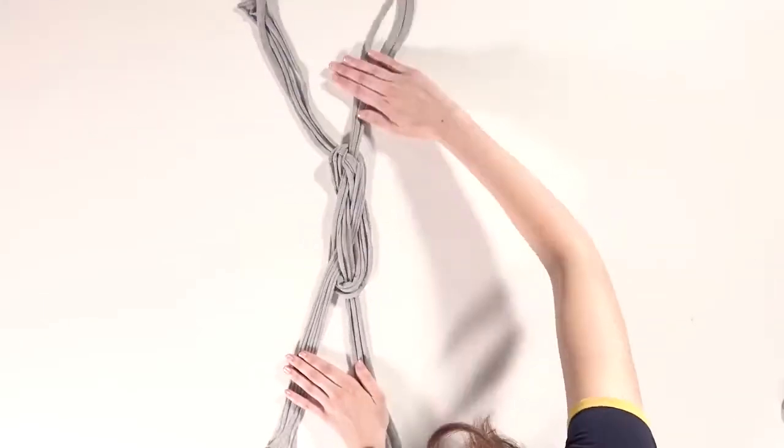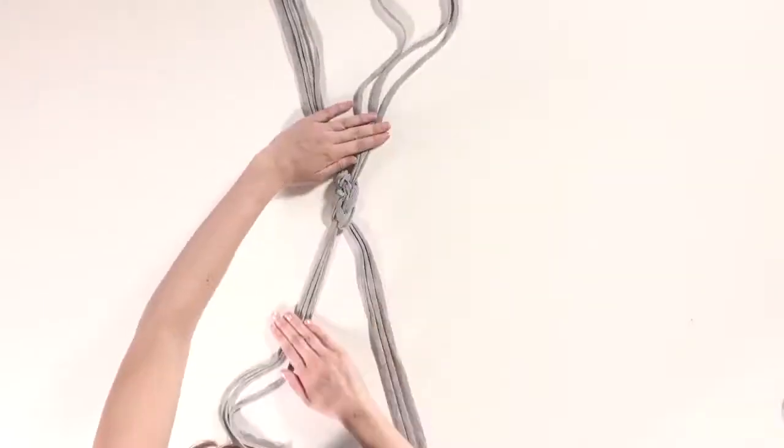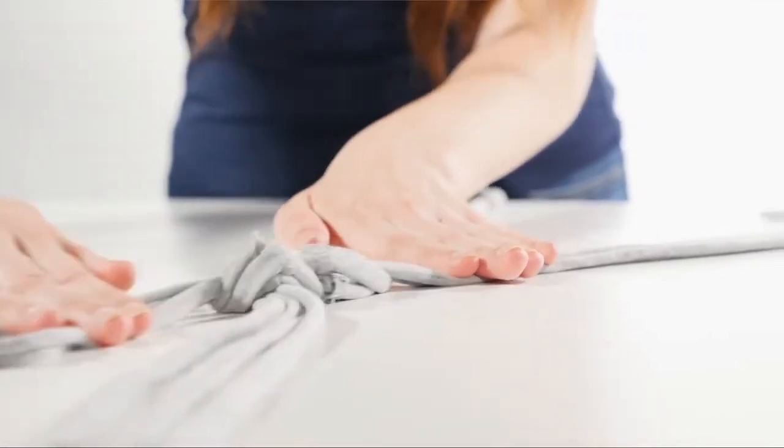If your knot looks like this, we're going to start to slowly tighten the knot by pulling each end individually like this. This is called a selos knot.